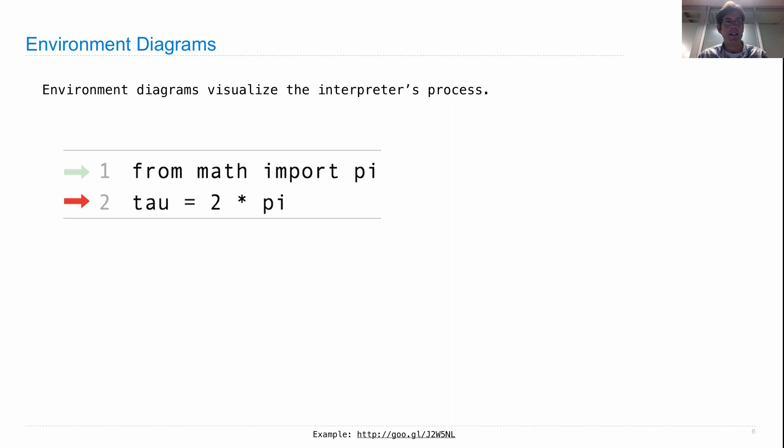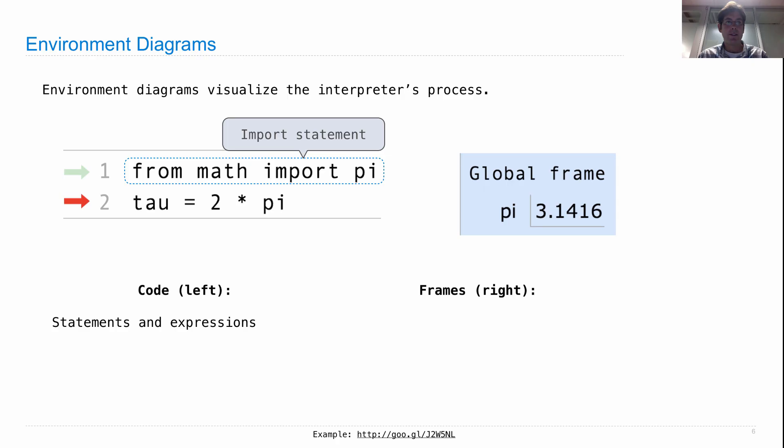And they look like this. You have some code on the left and then you have some frames on the right. The code is just regular Python code with some arrows to indicate where we are in the process of execution. The frames keep track of the bindings between names and values. The code's on the left, the frames are on the right. Within the code there are statements and expressions. We see an import statement and an assignment statement here.